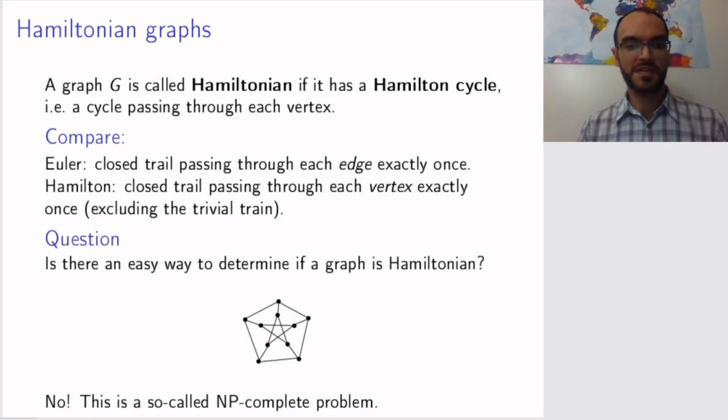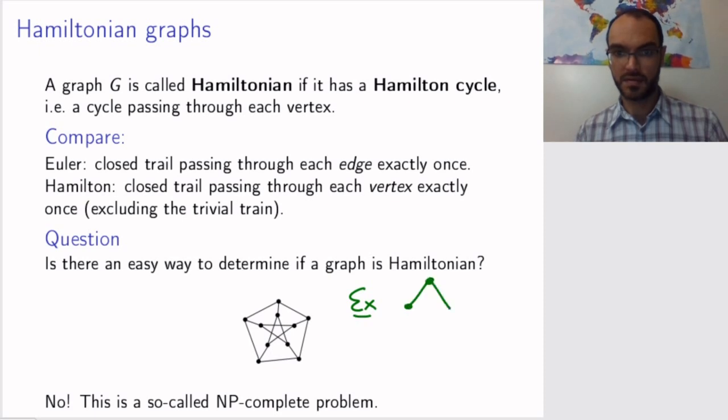Of course, if the graph is simple enough, you will be able to see if the graph is Hamiltonian or not. For example, this graph is Hamiltonian because just walking around the cycle gives you your Hamilton cycle, and this is not affected if I add edges or loops here.